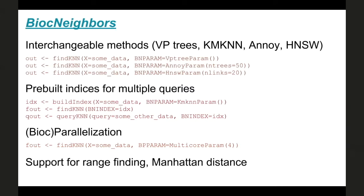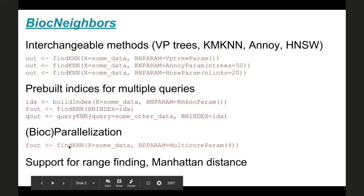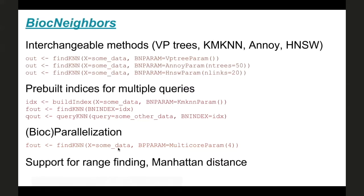We also provide support for prebuilt indices. You can build the index once and use it multiple times — for example, building the index once from some data, finding KNNs from that data, and also querying some other data with the same index without wasting time building the index again. This is important because the ability to build an index allows us to perform parallelization via BiocParallel, integrating with existing Bioconductor infrastructure. You can split this across multiple cores on the same machine, across multiple workers with SnowParam, or indeed across multiple cluster nodes.